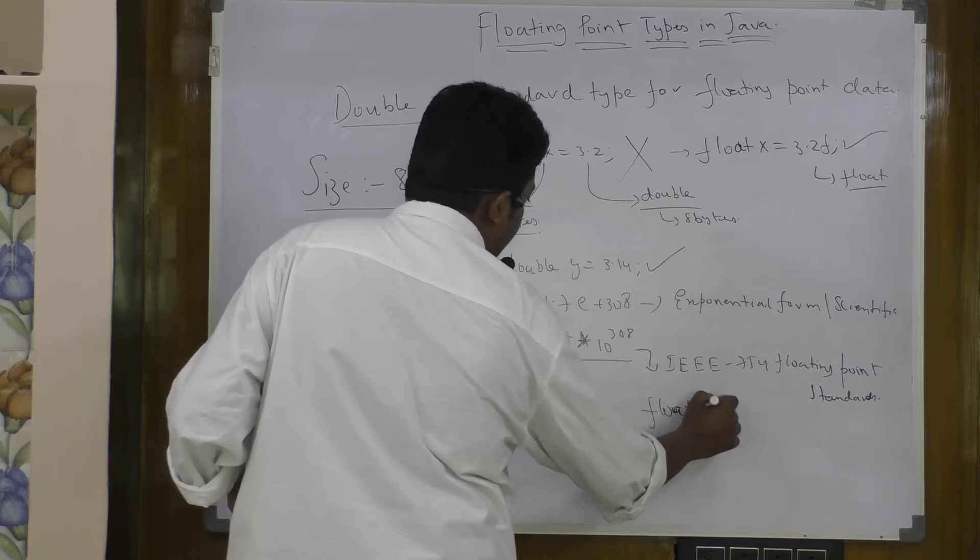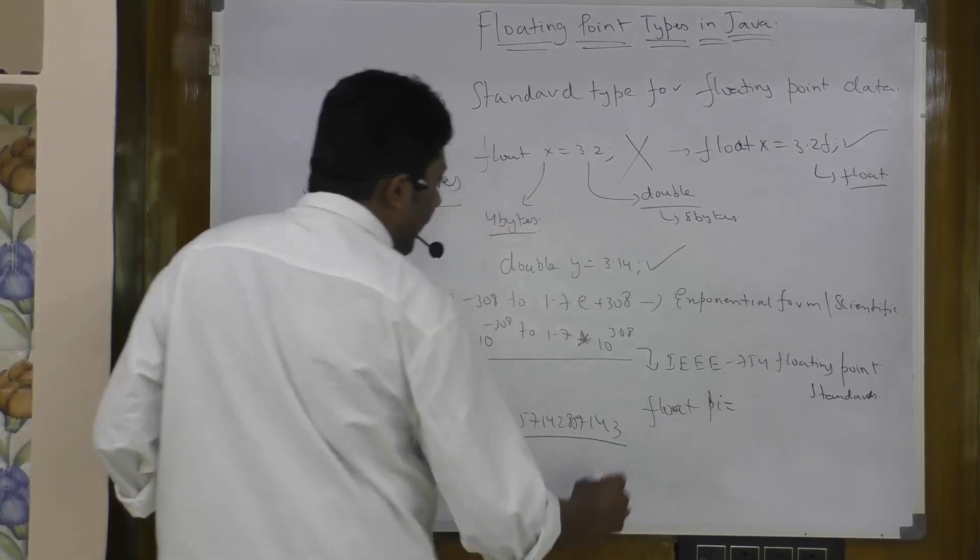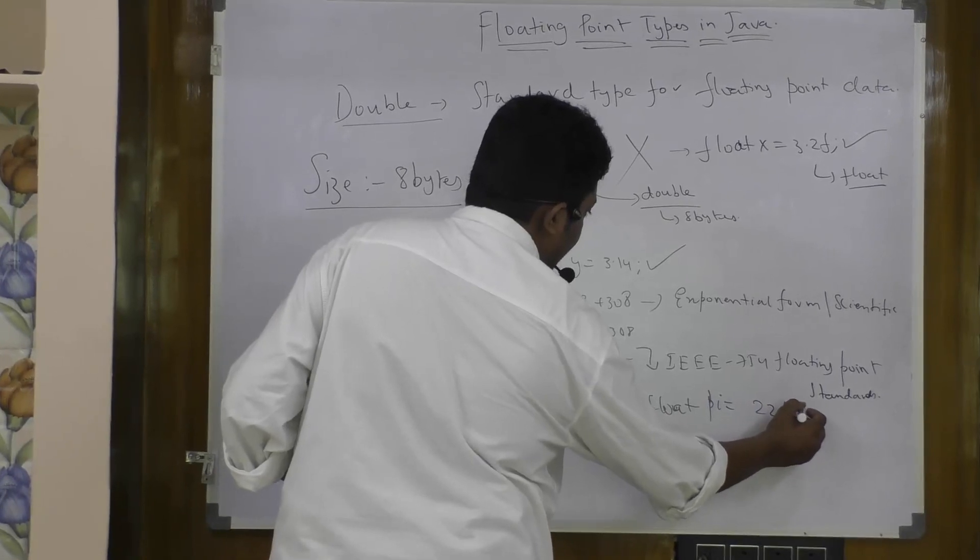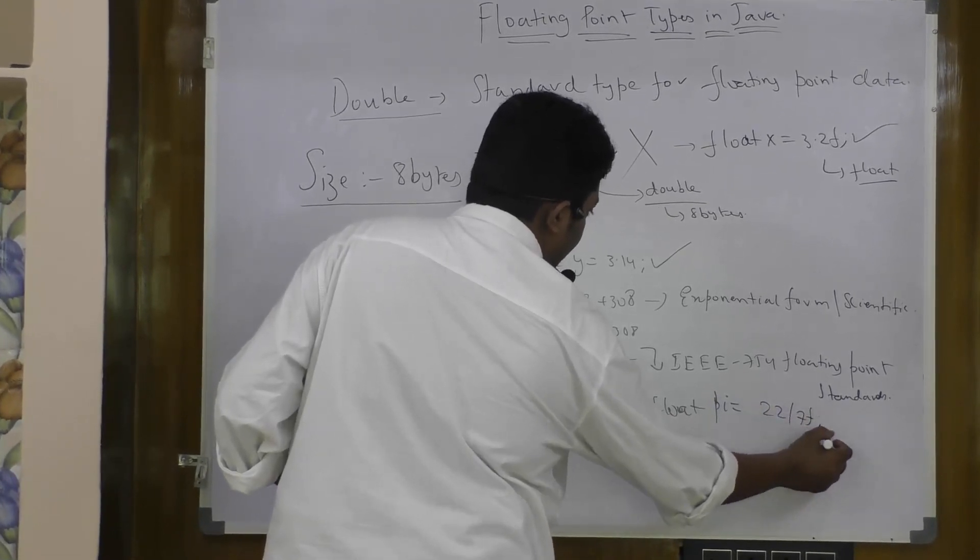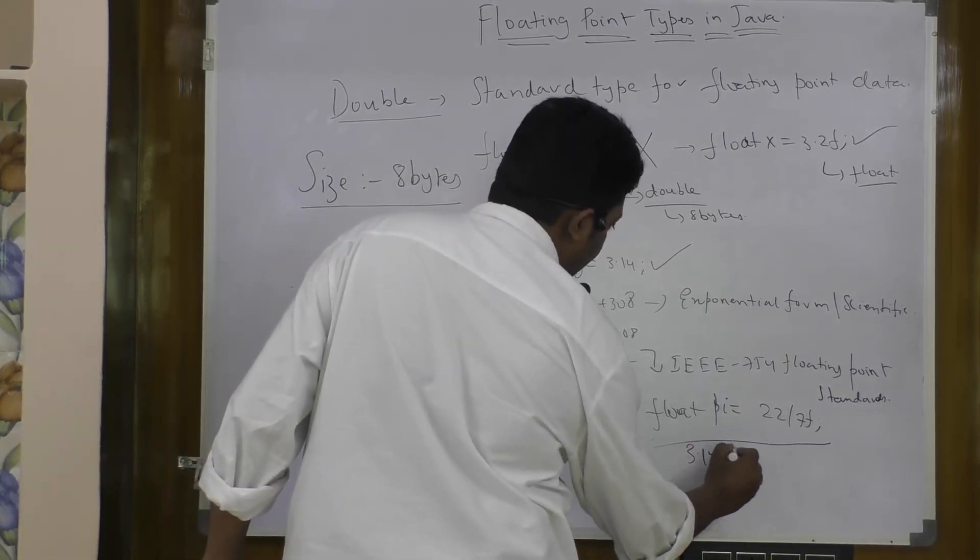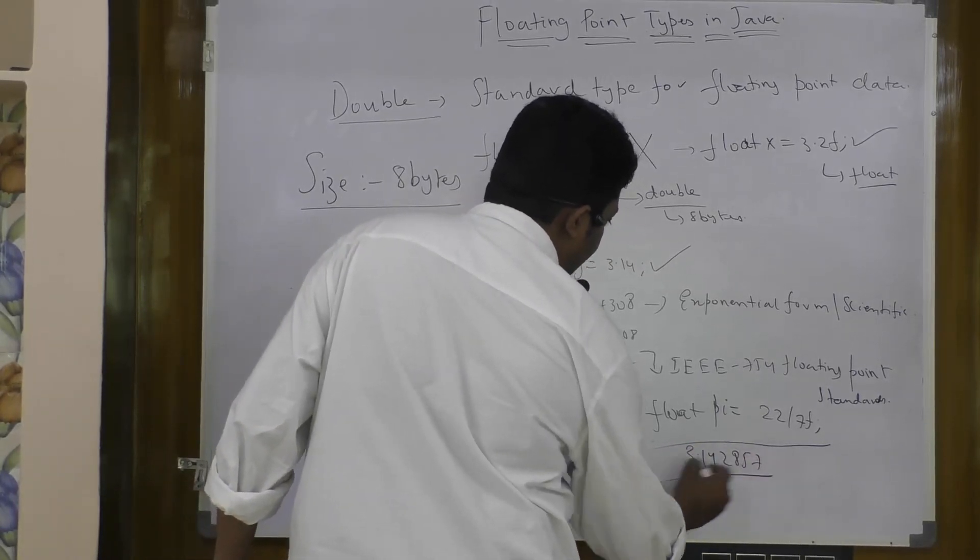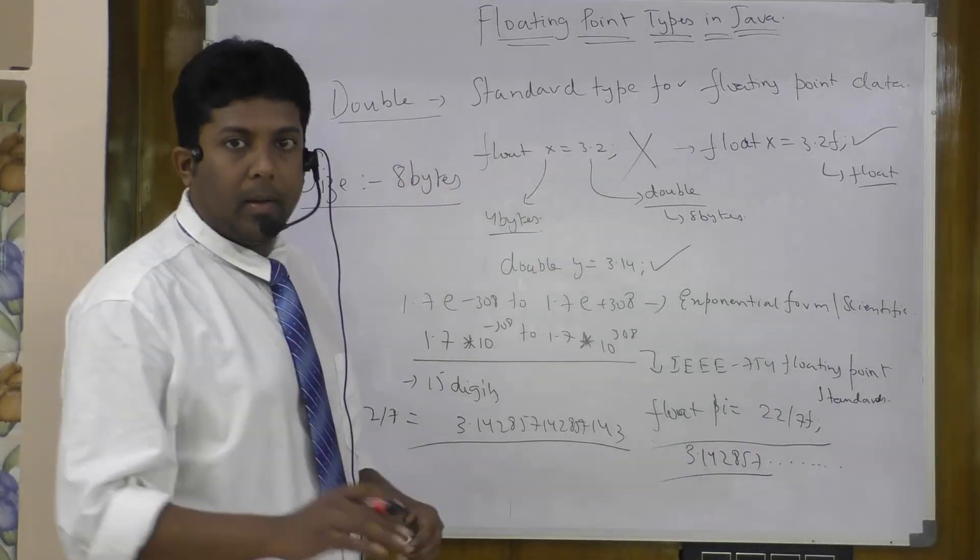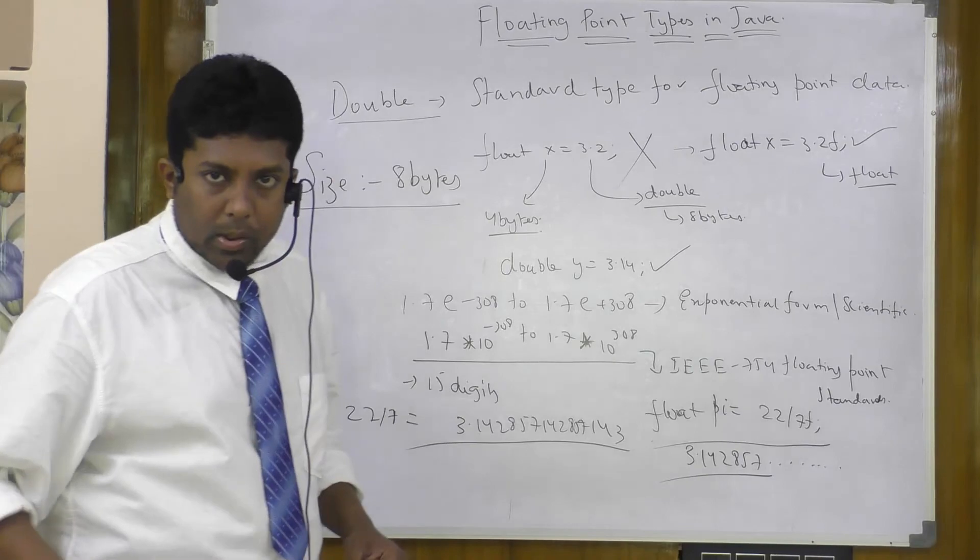If you are taking a float, and if you are declaring a variable float pi, and if you are trying to do 22 by 7f or something like this, this can handle only up to here: 3.142857. And rest of the values will be rounded off and your calculations might go wrong also.